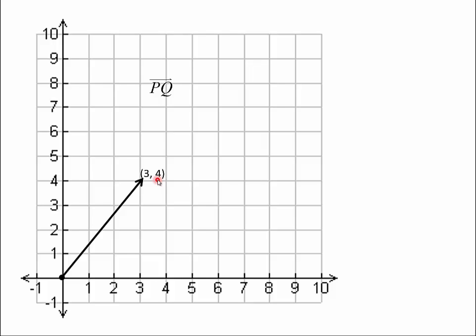Now we might want to name this vector something like V. Instead of having the initial and terminal point, we just have the terminal point, and we designate that vector to be 3, 4. Notice these little brackets — when you see that, you know you're talking about a vector.